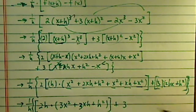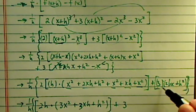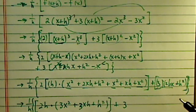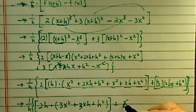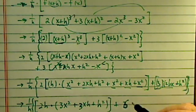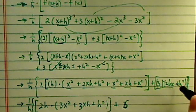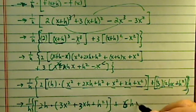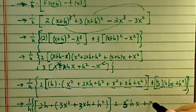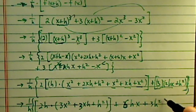And then, plus 3 times 2, which is 6. And then, plus 6h x, and then plus 3h squared. So this is the second chunk.